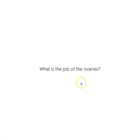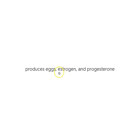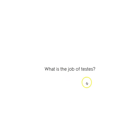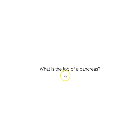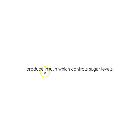What is the job of ovaries? Produces eggs and female hormones such as estrogen and progesterone. What is the job of testes? To produce sperm and the male hormone testosterone. What is the job of the pancreas? The pancreas makes insulin — insulin is a hormone that controls sugar levels.